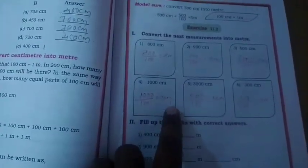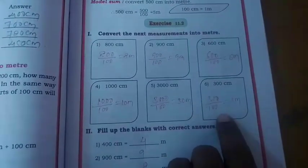1000 cm is 10 m. 3000 cm is 30 m. 300 cm is equal to 3 m.